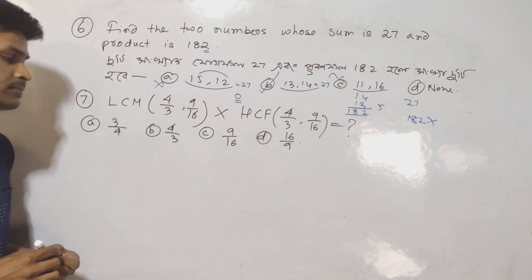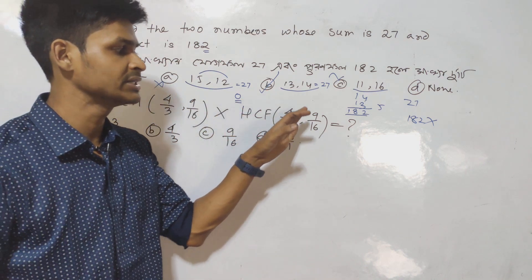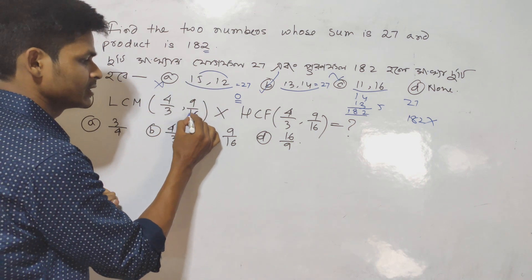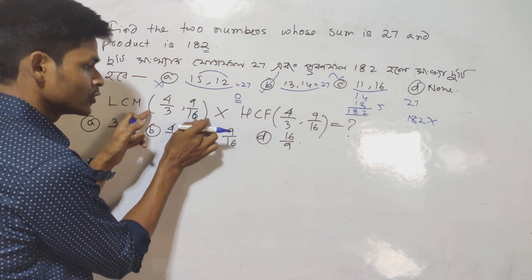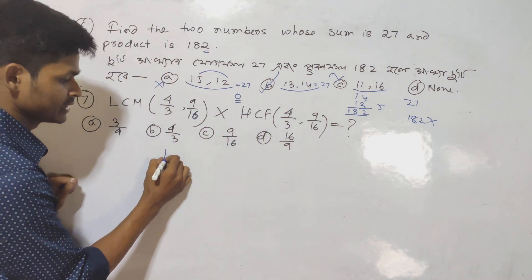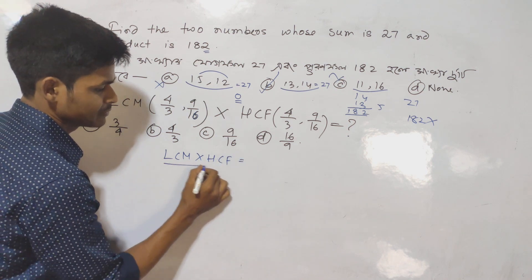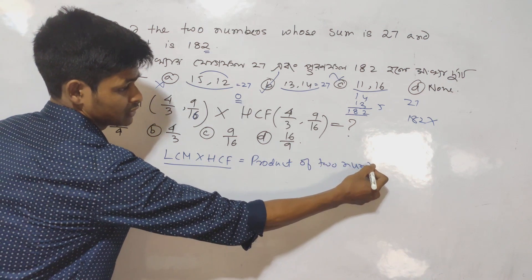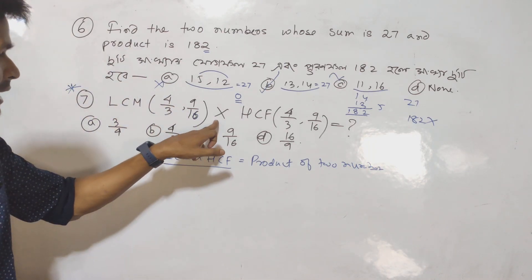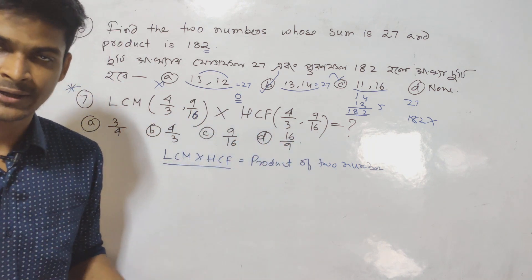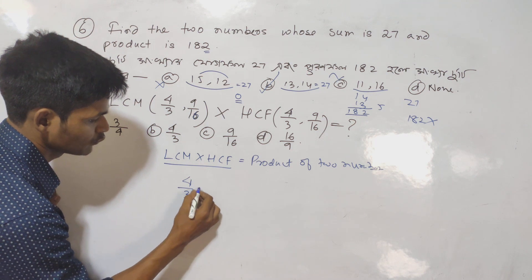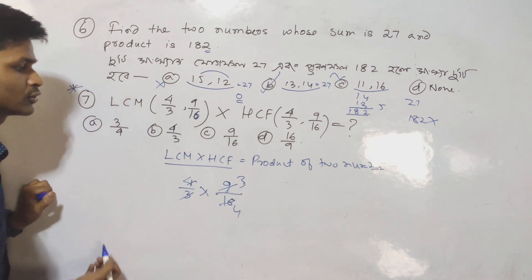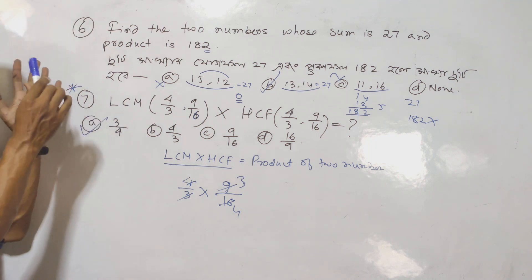Next question: LCM(4/3, 9/16) × HCF(4/3, 9/16). This is an important question for competitive exams. The formula is: LCM × HCF = product of the two numbers. So LCM × HCF = (4/3) × (9/16) = 36/48 = 3/4. The answer is 3 by 4.